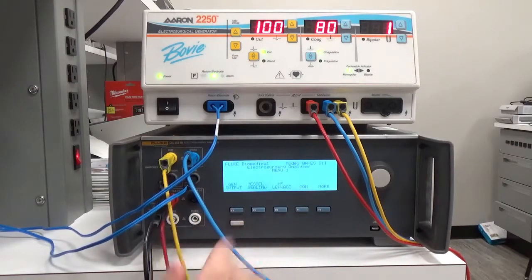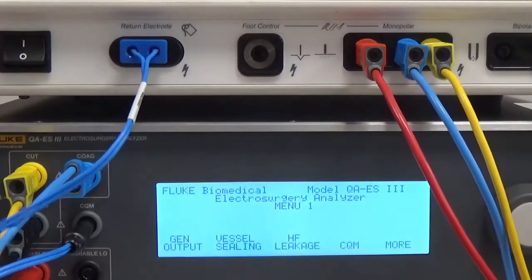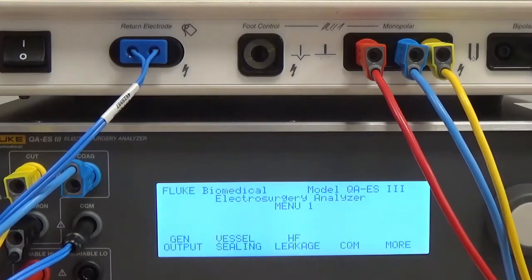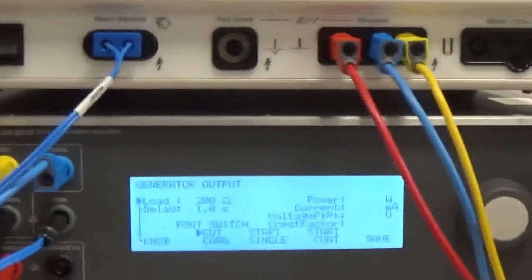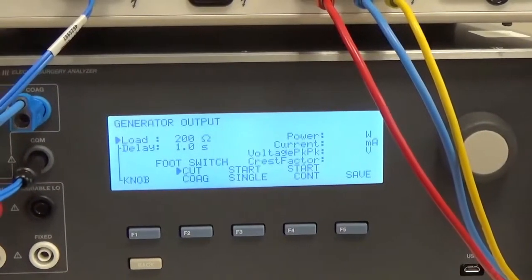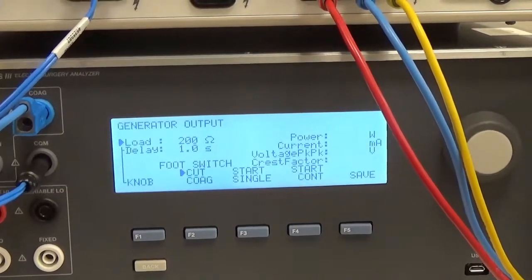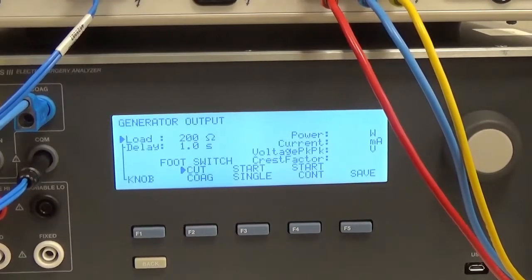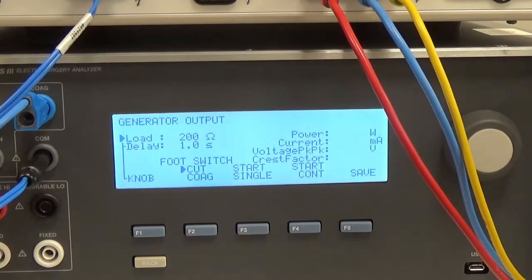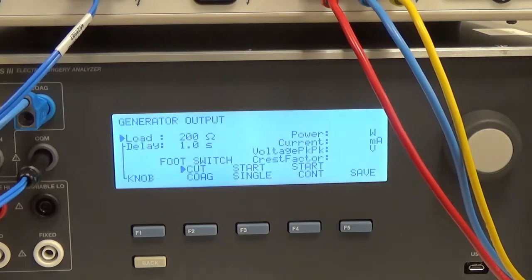So on the main menu, we're going to go ahead and do the generator output test. You have load and delay. Fluke recommends that you use 200 ohms for a load when doing this testing, and they recommend that the delay is one second. You can do cut or coag depending on what type of test you want. You can do a start single test or a start continuous test.